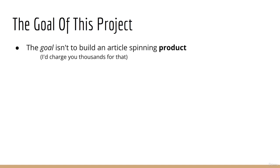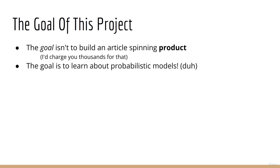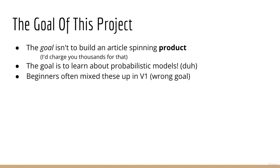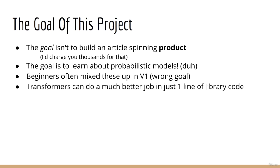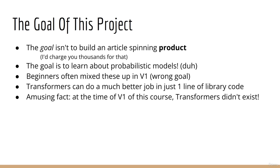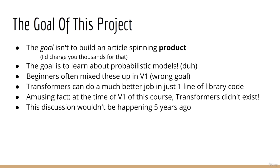Remember that the goal of this isn't to build a modern article spinning product. The goal of this is to learn about Markov models, which is the current section of this course. Many beginners mix this up, so it's important to go into this with the right mindset. Furthermore, in more advanced sections and courses, we will learn about transformers, which will do a much better job at this task. One fact I find quite amusing: when version 1 of this course was released, transformers did not even exist. A lot of beginners came to that course thinking you could actually build a human-level article spinner that would just magically write an article out of thin air.